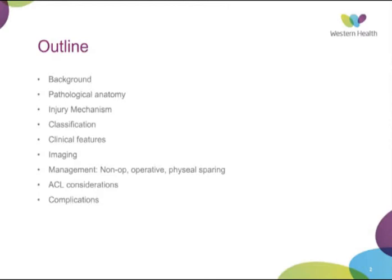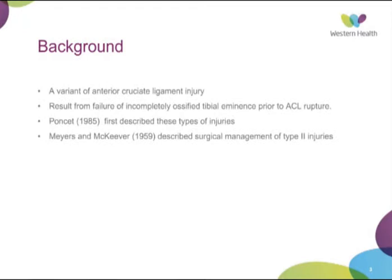Just a bit of background. Tibial eminence fractures, also known as tibial spine fractures, are basically a variant of an anterior cruciate ligament injury, generally in the younger, skeletally immature population. It results from failure of an incompletely ossified tibial eminence prior to ACL rupture. An ACL rupture is kind of the adult version of this injury.